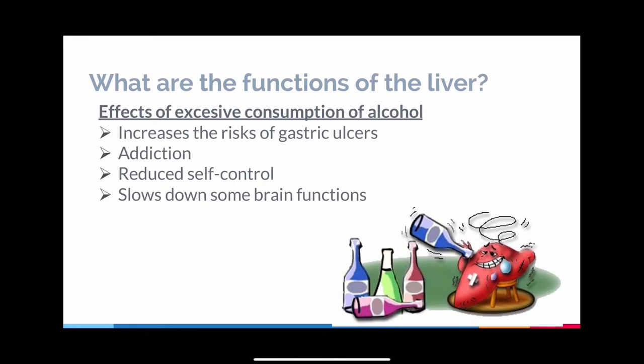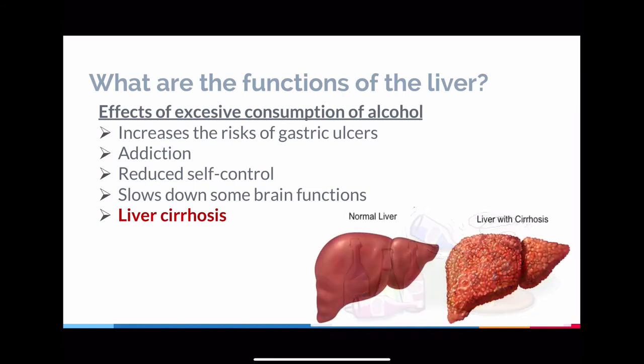We all know that excessive consumption of alcohol is unhealthy — it can increase the risk of gastric ulcers, lead to addiction, result in reduced self-control, and slow down some brain functions. That's why there's always the advice: if you drink, don't drive. But importantly in this chapter, alcohol actually affects the liver, and this impact has very harmful consequences — it's called liver cirrhosis. Looking at these two liver diagrams, one shows a normal liver and one shows a liver with cirrhosis — you can see a lot of tiny bumps, which are actually scar tissue.